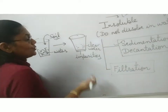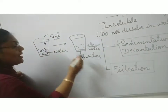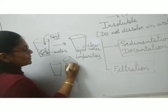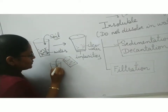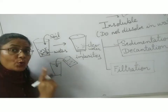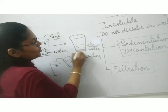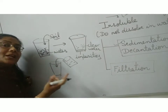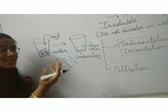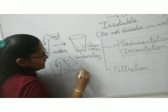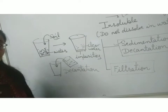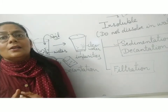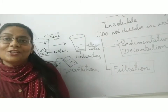In the next method, without disturbing the jar, we take this jar and transfer the water into another jar without disturbing it, so that the soil particles do not get mixed with the clear water. This process of transferring the clear water into another jar without disturbing it is called decantation. Both sedimentation and decantation are physical methods by which we remove insoluble impurities that are not dissolved in water.